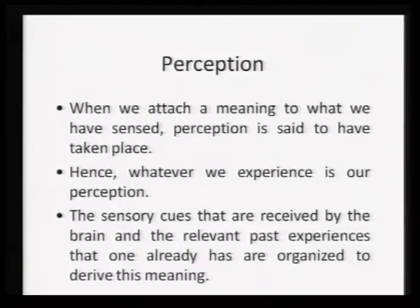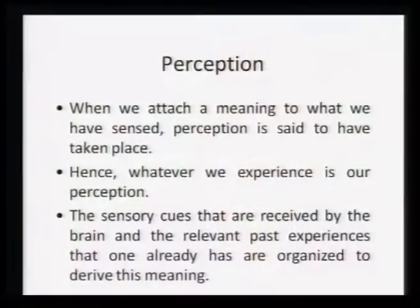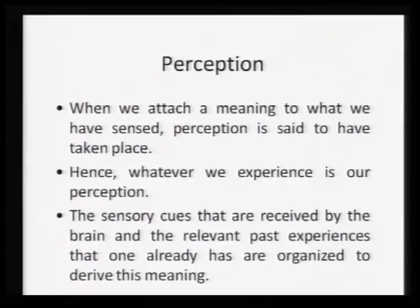The absolute threshold refers to the minimum intensity of the stimulus that can be detected by your receiver a minimum 50 percent of the times. Once we have sensed whatever impulse we have received, we start attaching a meaning to it. When we attach a meaning to what we have sensed, perception is supposed to have taken place. Whatever we experience is our perception. The sensory cues received by the brain and the relevant past experiences that one already has help us organize and derive a meaning.